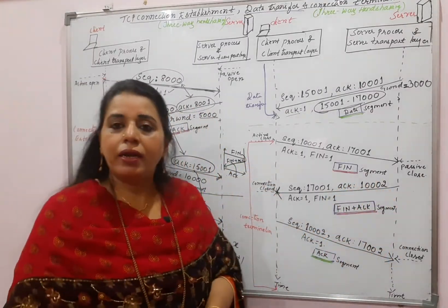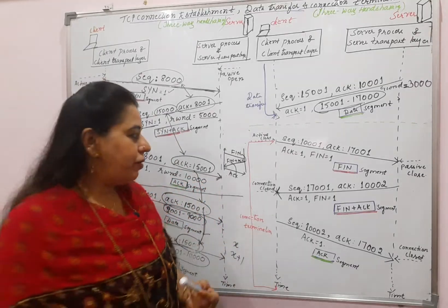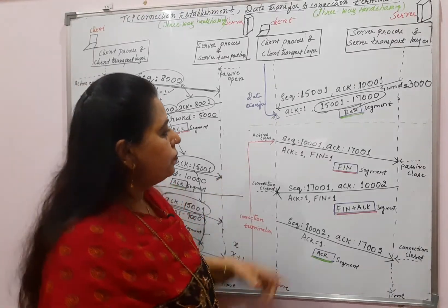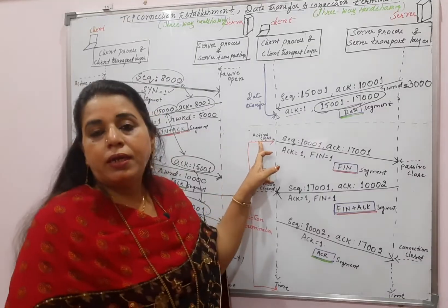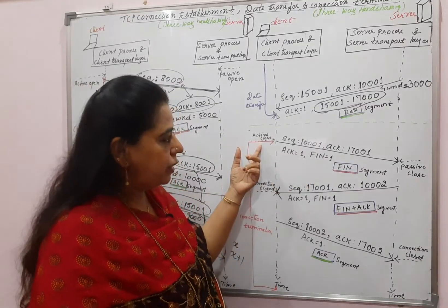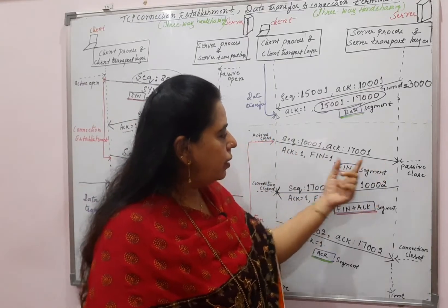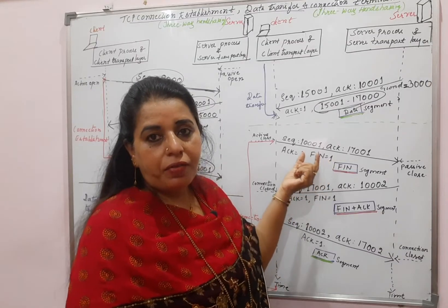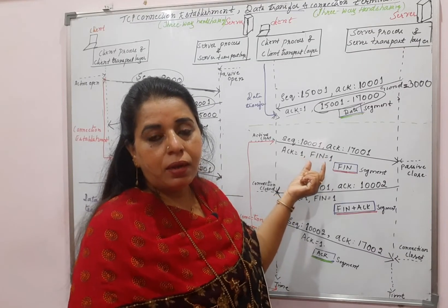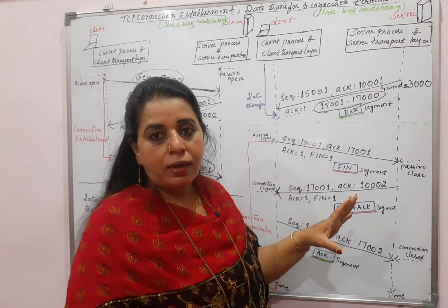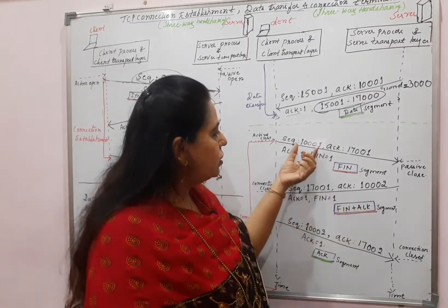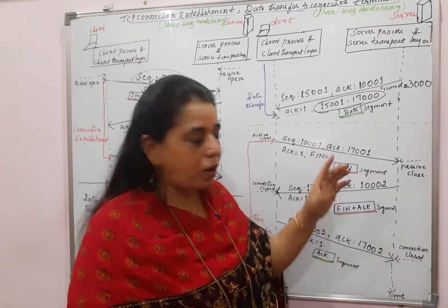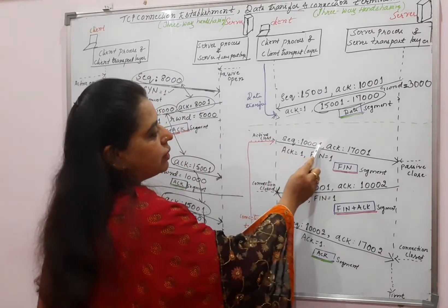Let us see the different values used in the connection termination phase. The client has decided to close the connection — active close — so it will send a segment with FIN set to 1. If it is a FIN segment with no data, then it will consume a sequence number. That sequence number 1001 cannot be used again.